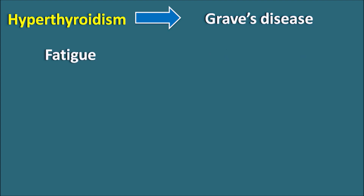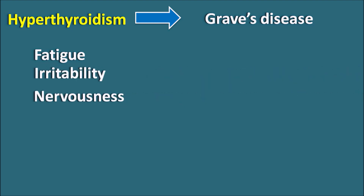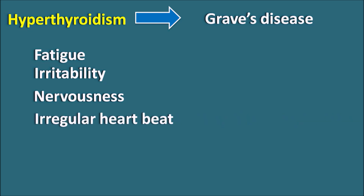Generally, fatigue is observed in patients, and because of the increased levels of thyroid hormones, irritability and nervousness are observed. It also affects the heart to produce irregular heartbeat, so palpitations can be observed. Insomnia — lack of sleep — is another important symptom that can be observed with hyperthyroidism.